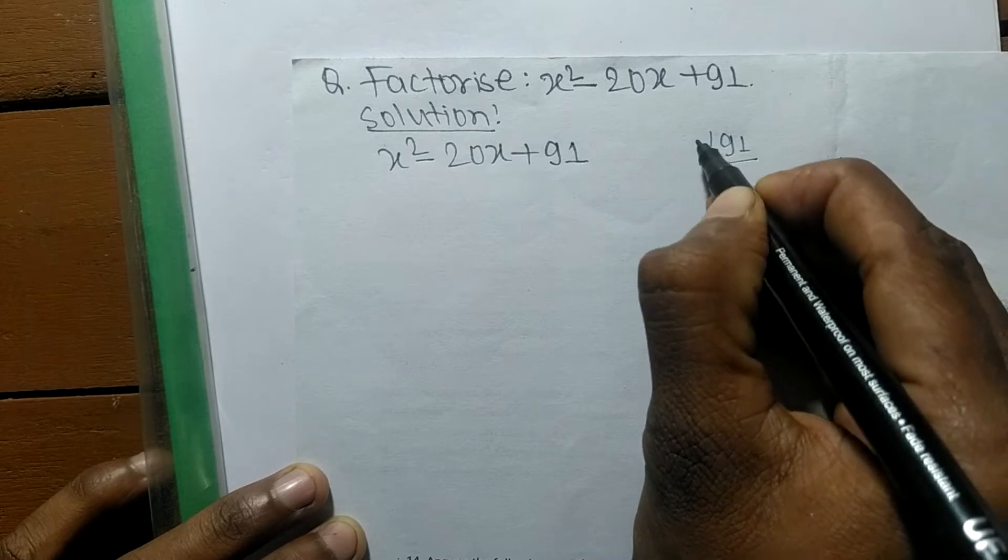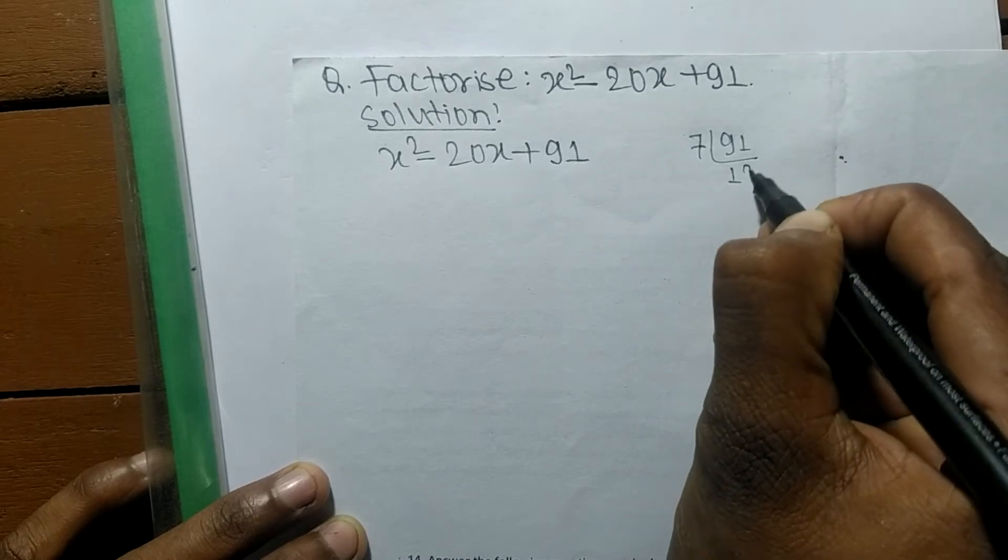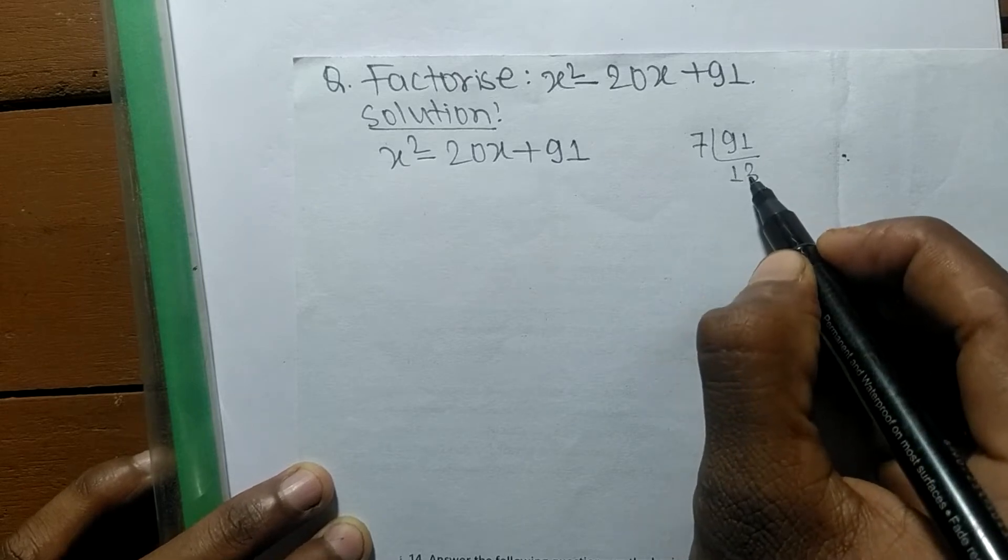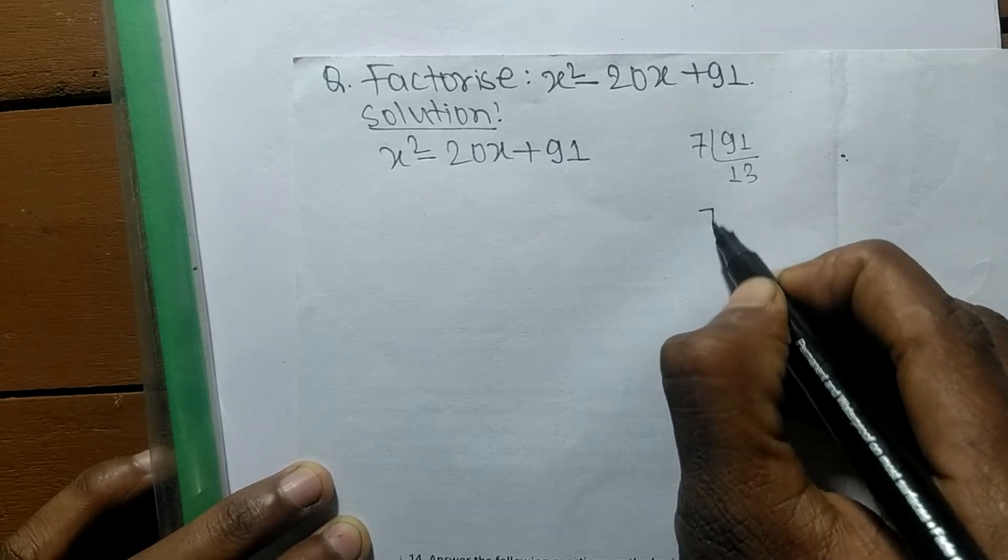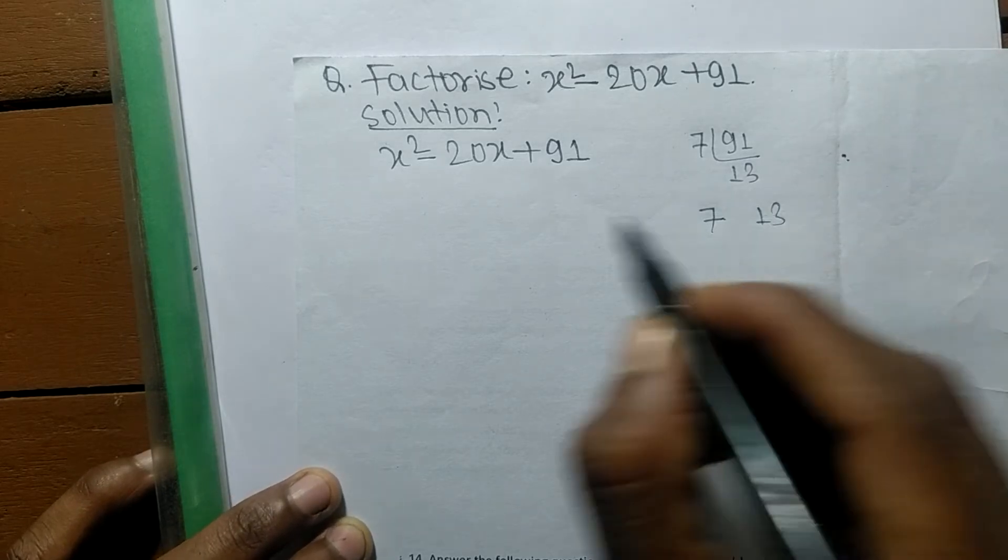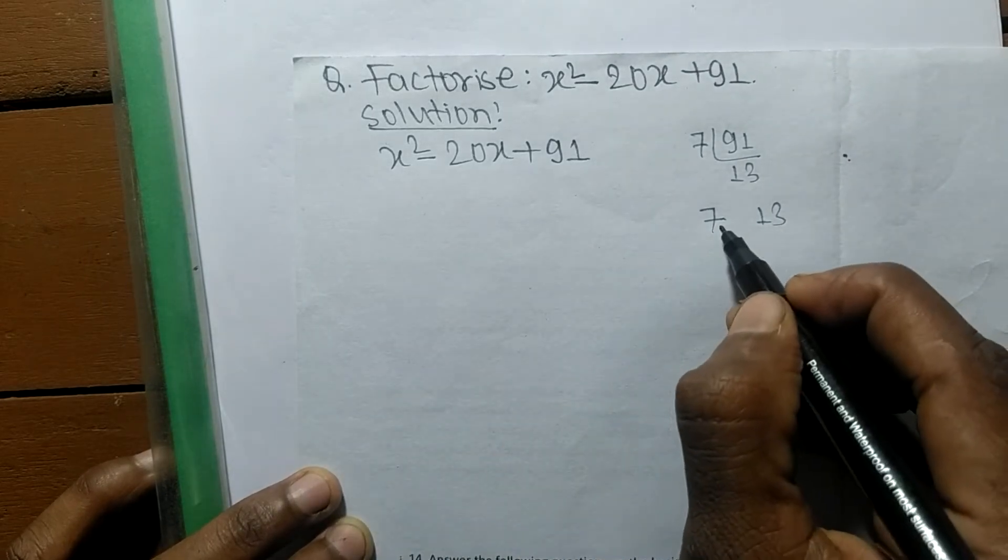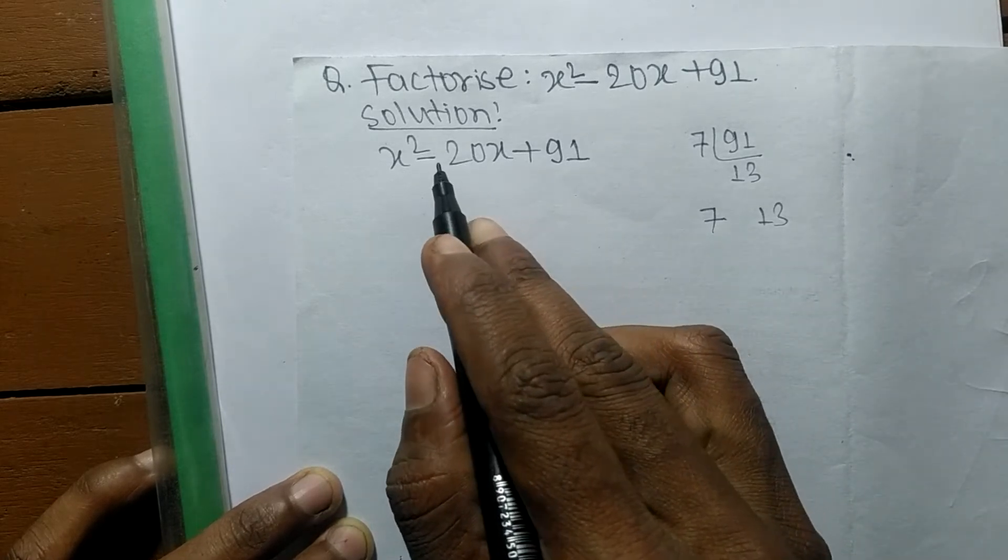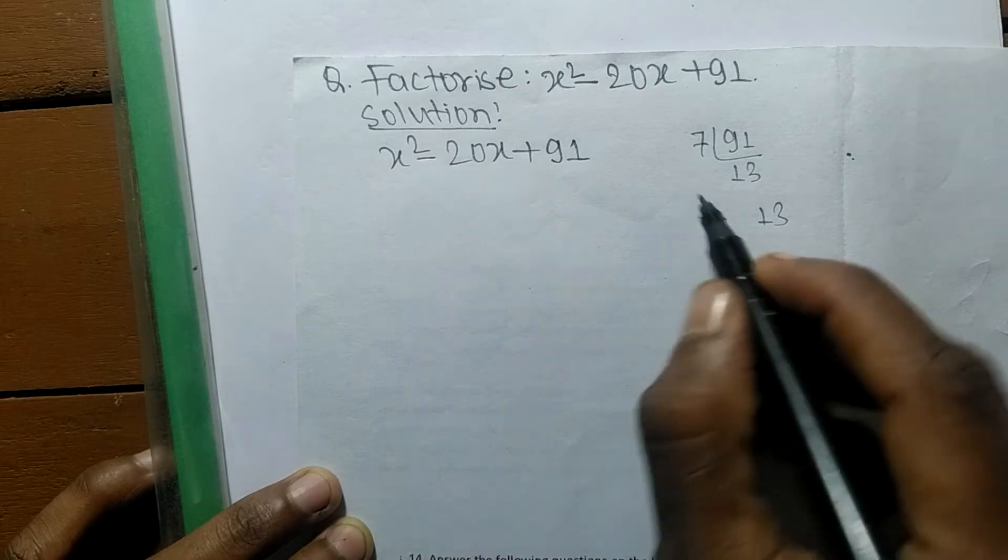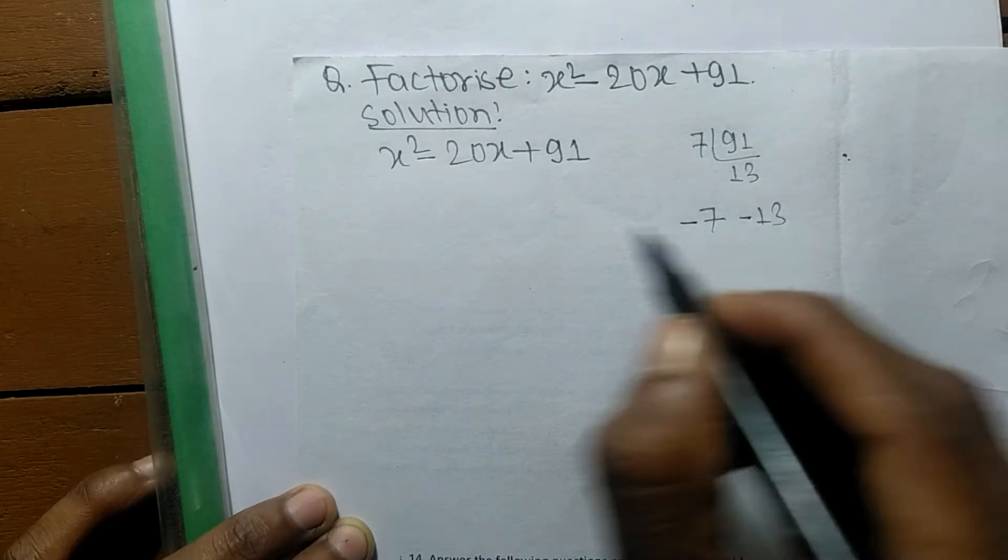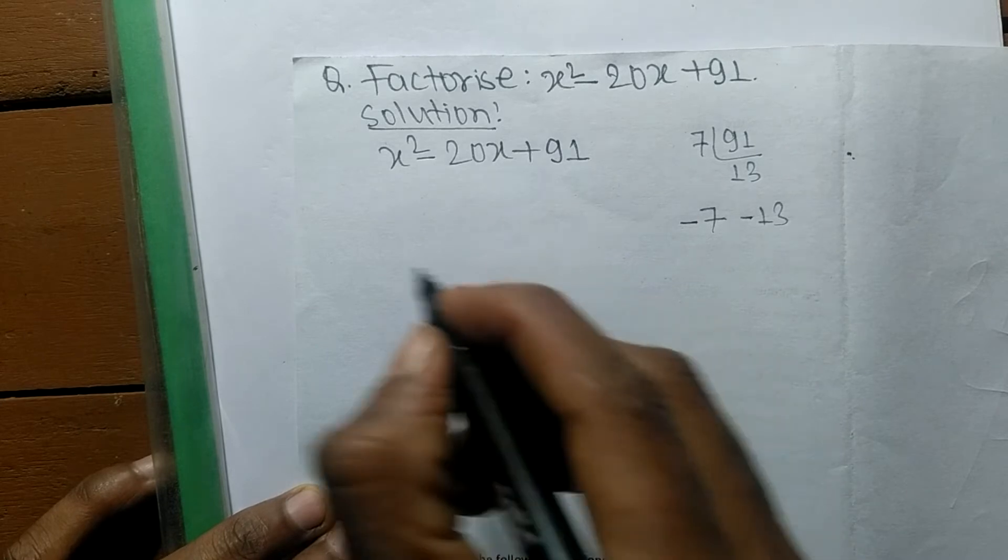It is 7 times 13, which equals 91. So we have numbers here, 7 and 13. From these numbers, 7 and 13, we have to take 20. 7 plus 13 gives us 20. Here we have to take minus 20, so minus 7 and minus 13 means it is minus 20.